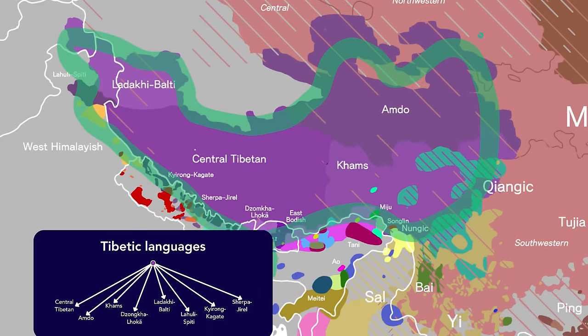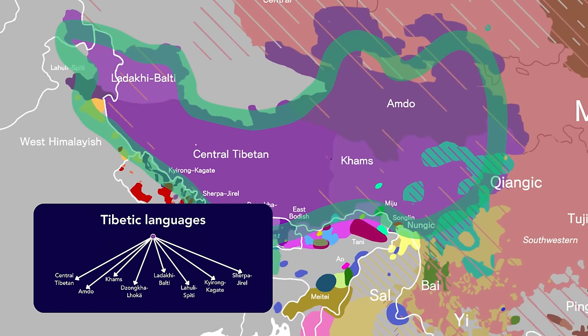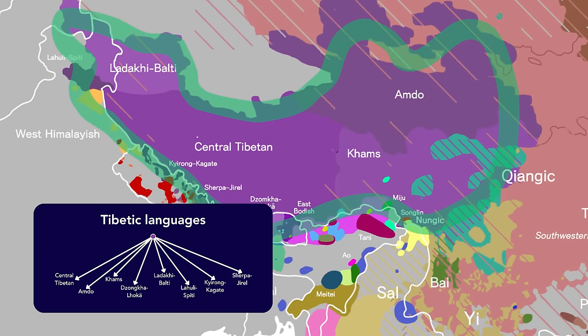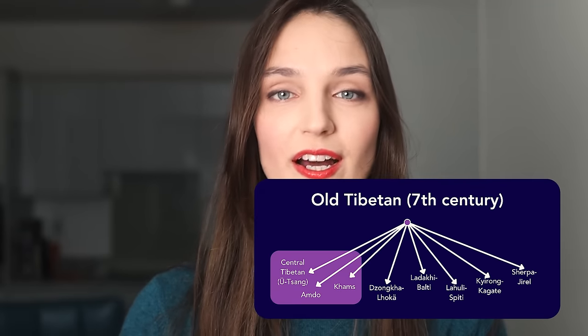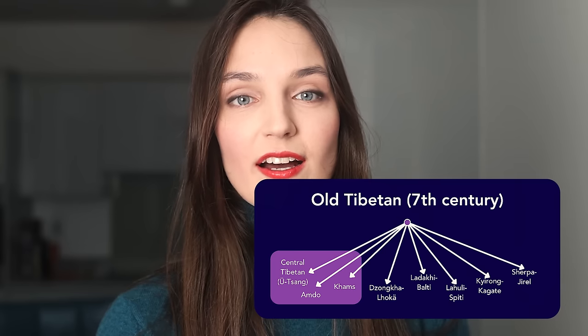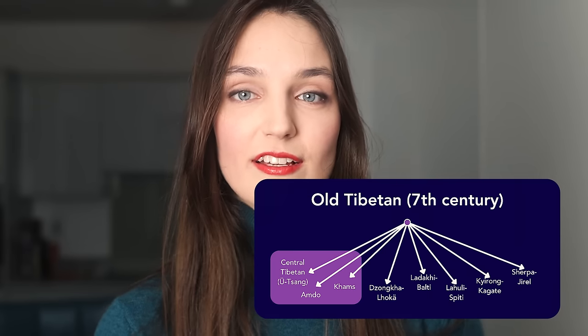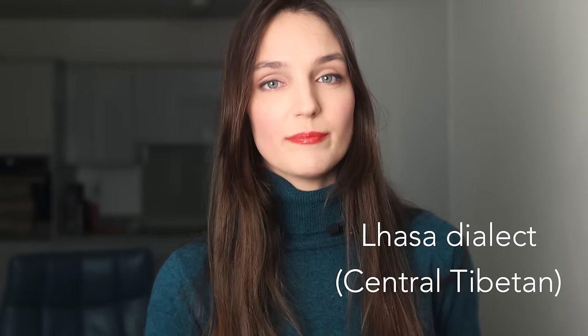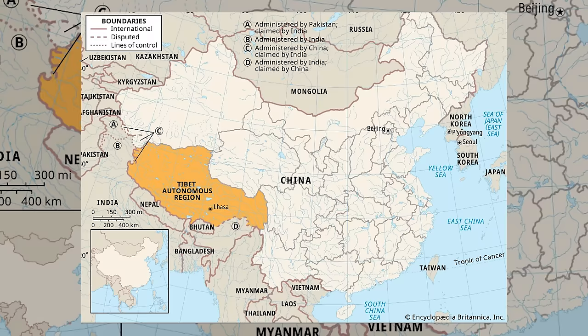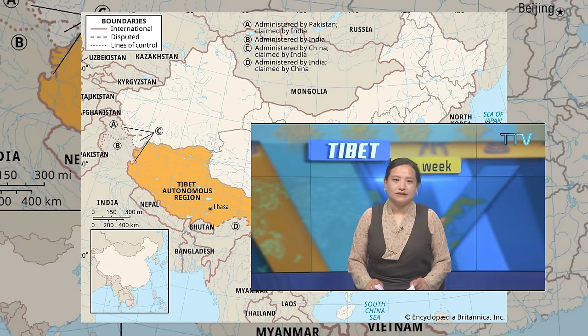Those are languages that are actually called Tibetan. But there are also the Tibetan languages — over 50 distinct languages, including languages like Dzongkha in Bhutan, Sherpa in Nepal, or Ladakhi in India. All the Tibetan languages come from Old Tibetan, a language spoken in the 7th century. The Lhasa dialect of Central Tibetan is considered to be the standard Tibetan, which is also official in the Tibet autonomous region and the language of Tibetan media and education.